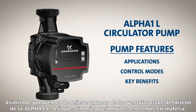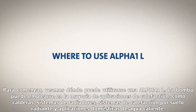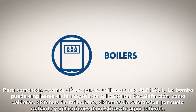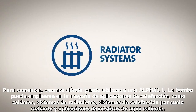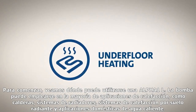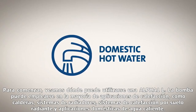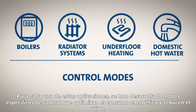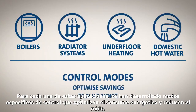So, without further ado, let's jump straight into it. For a start, let's look at where an Alpha 1L can be used. The pump can be applied in most heating applications including boilers, radiator systems, underfloor heating systems and domestic hot water applications. For each application, specific control modes have been developed to optimize energy savings and reduce noise.